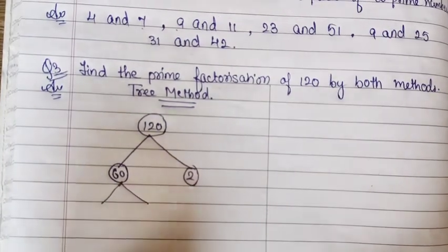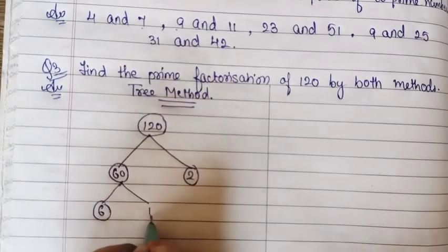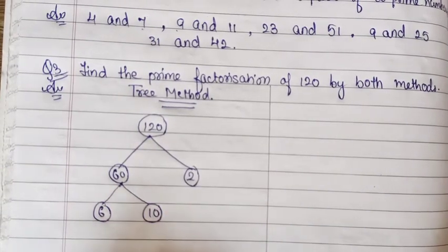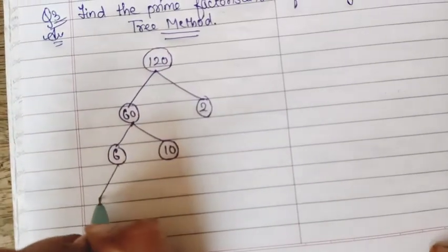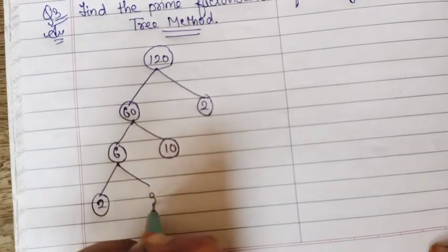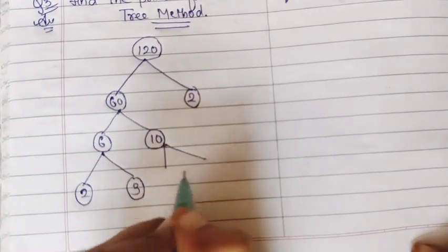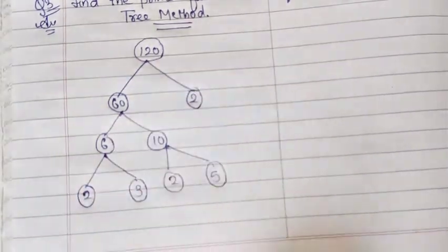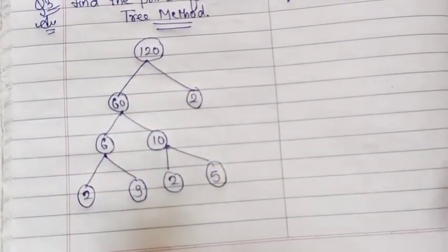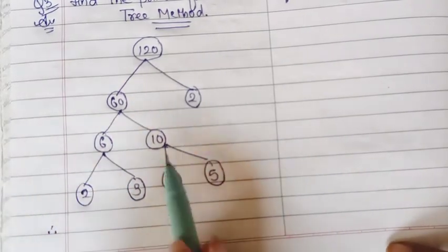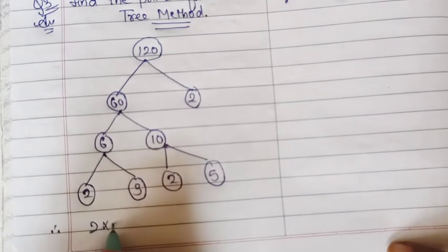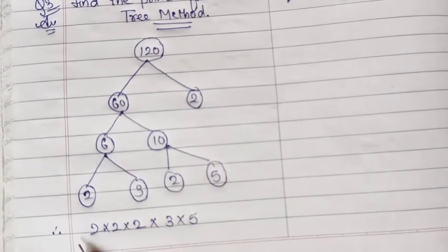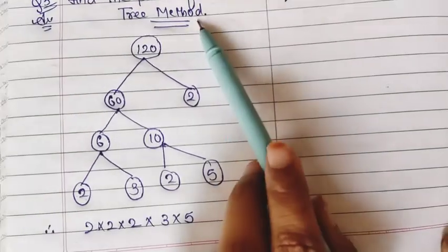Now we go to 60 and make 2 branches: 6 × 10 = 60. Both 6 and 10 are composite numbers so we go ahead. 6 gives 2 × 3, and 10 gives 2 × 5. So here we can note down the prime numbers from the factor tree. The answer is 2 × 2 × 2 × 3 × 5.